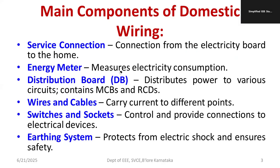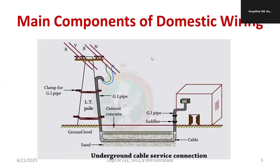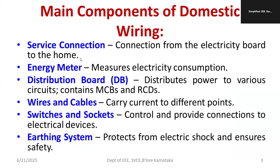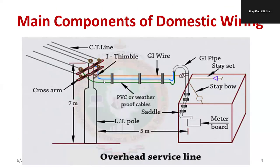The service connection is a wire or cable that connects the electricity board to the home. There are two types: the overhead service line and the underground service connection. Underground service connections are mainly used in thickly populated or congested areas where overhead connections are not feasible. For normal conditions, such as in villages, the overhead service line is used — it is straightforward and easy.